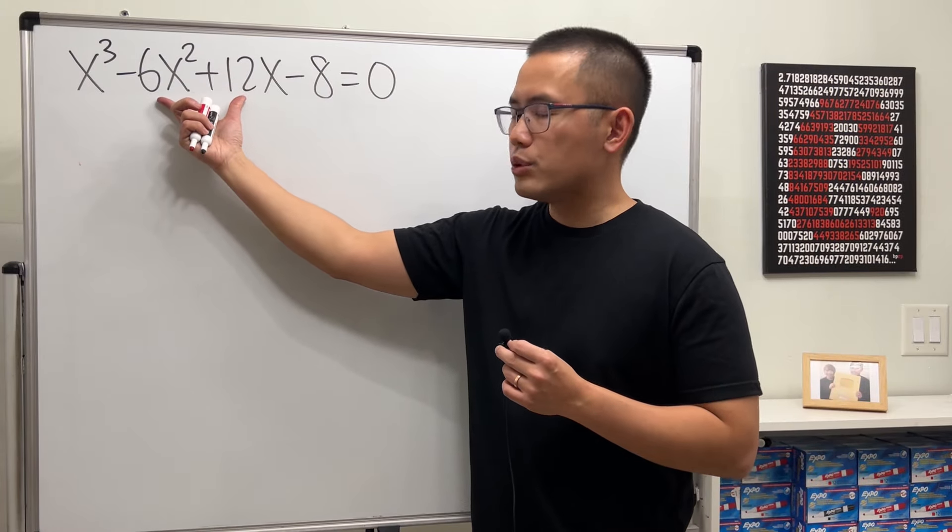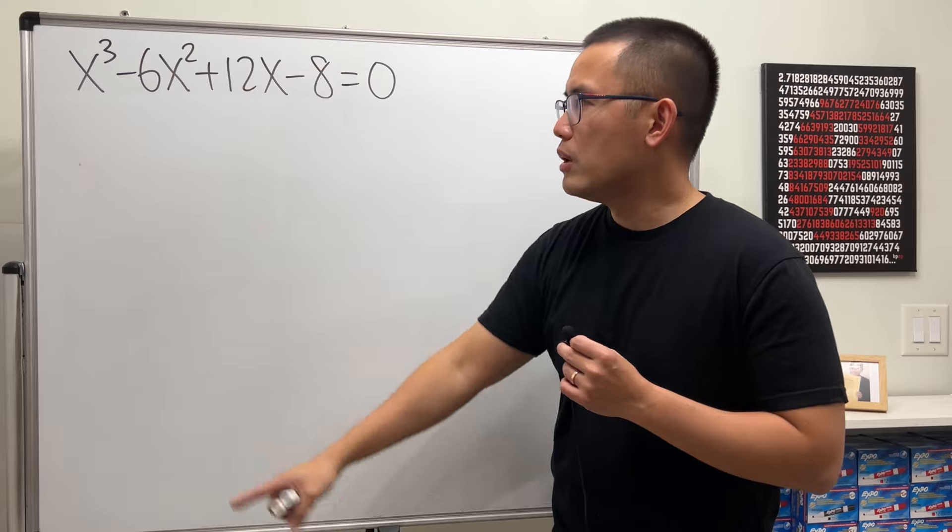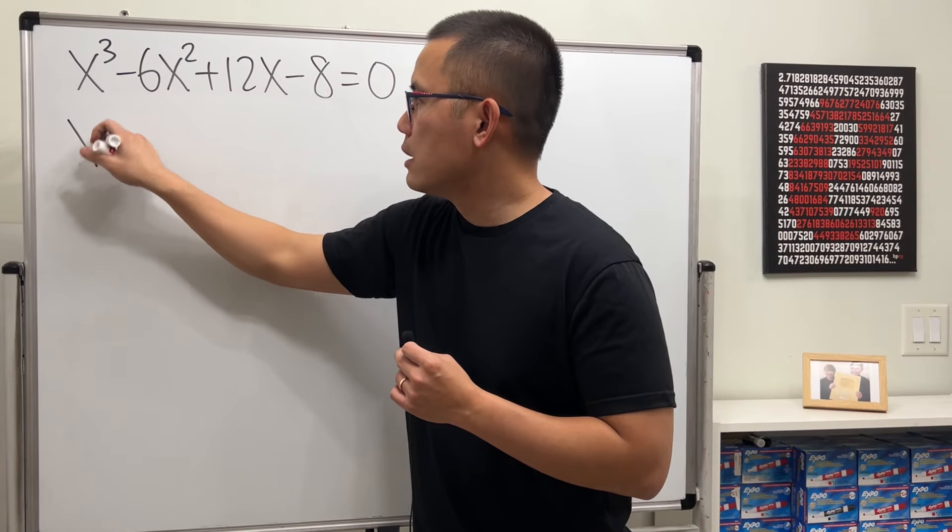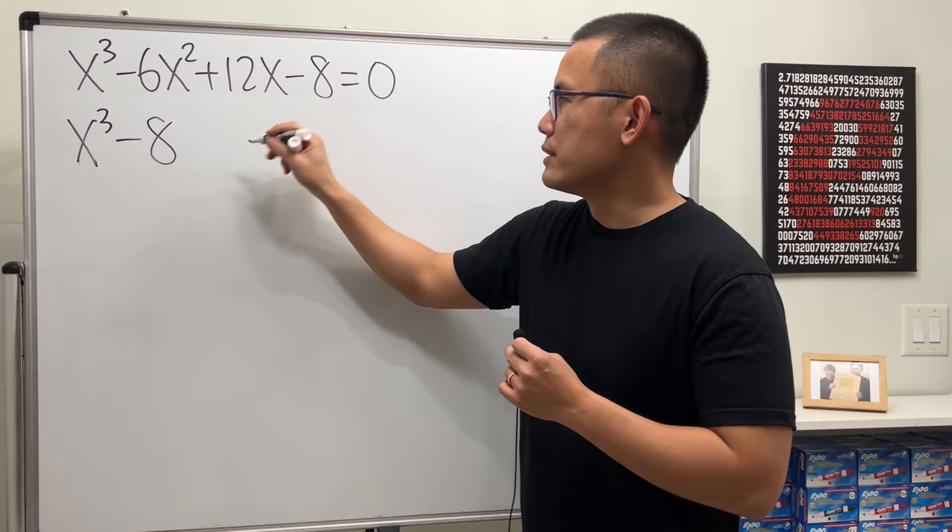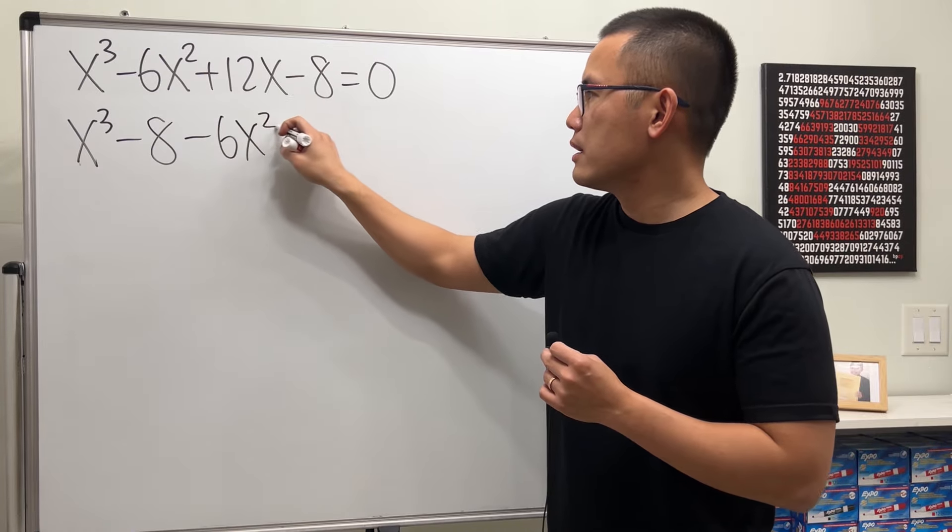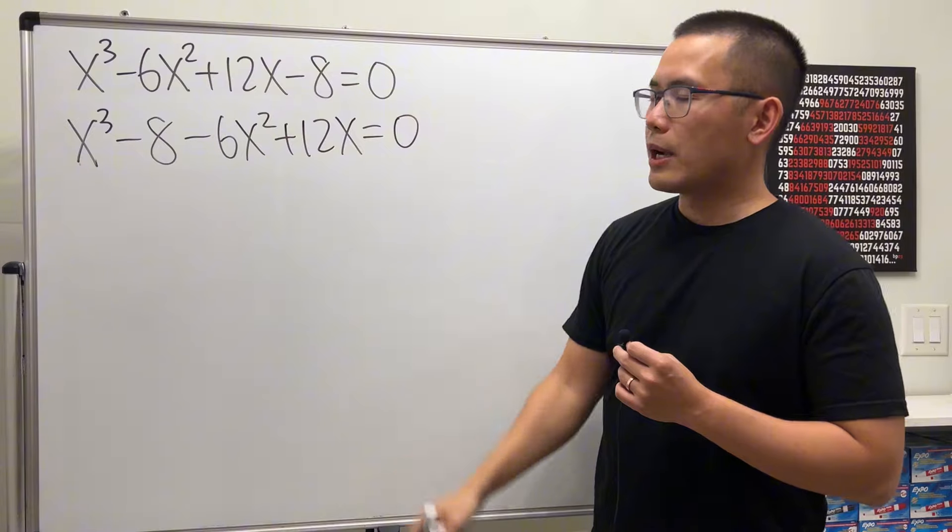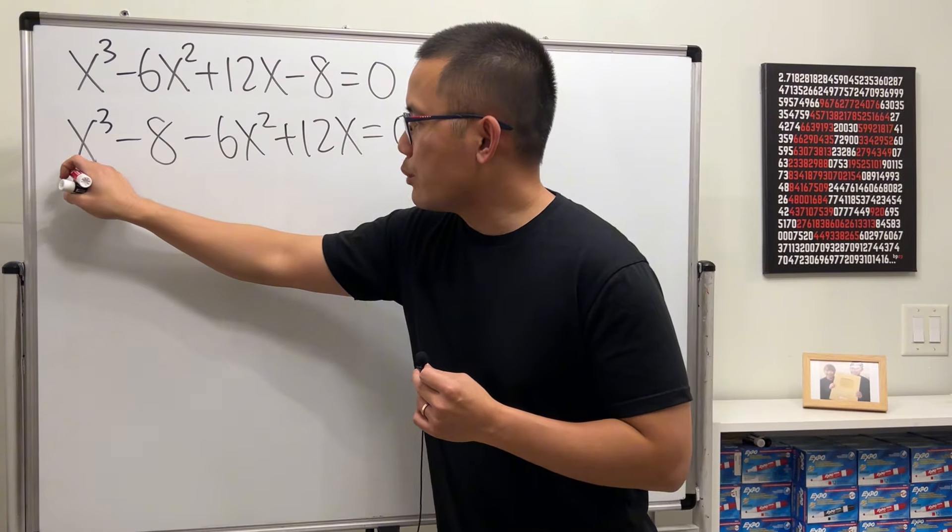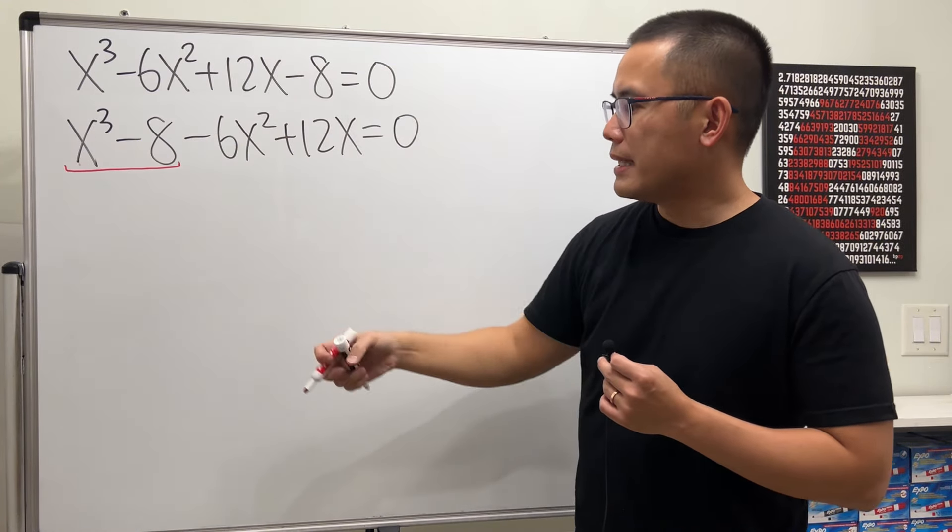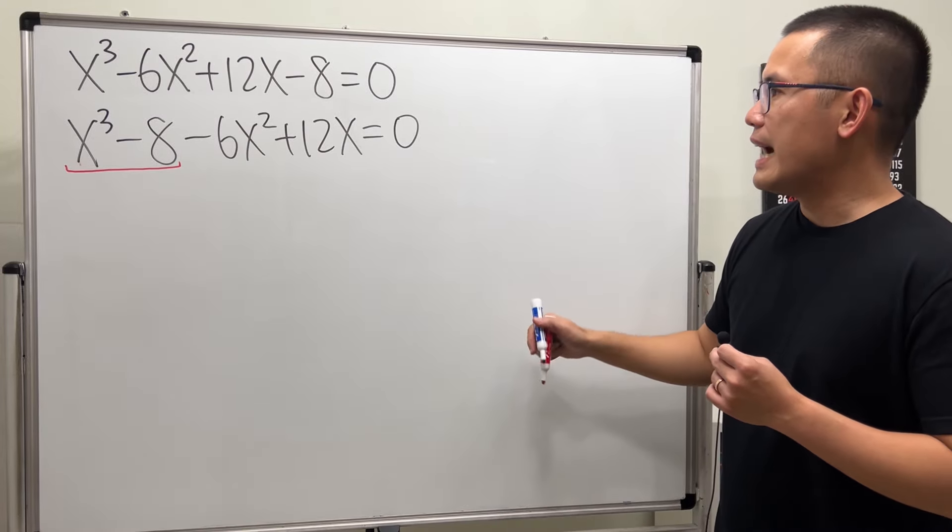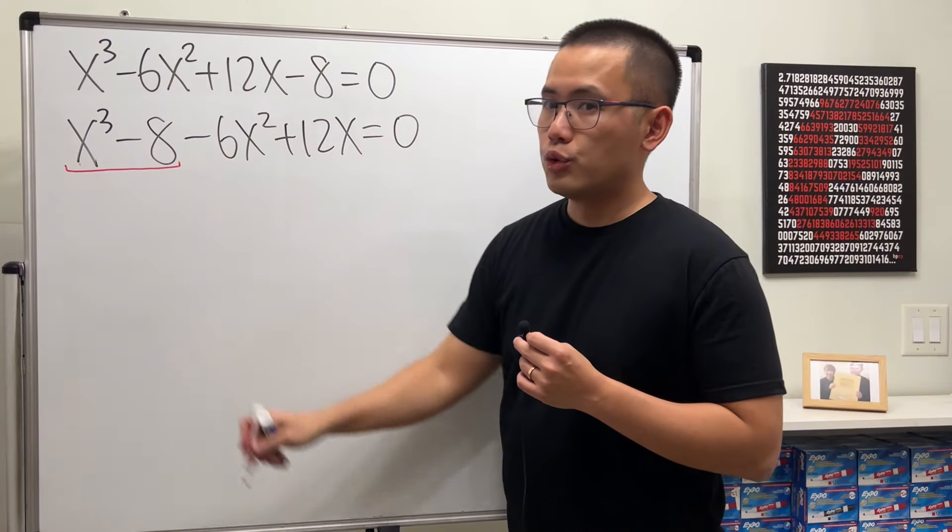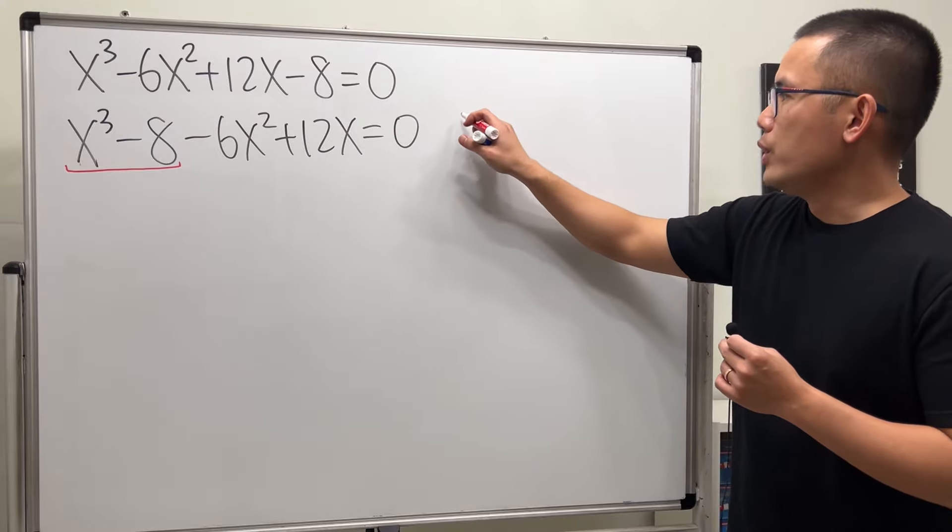So let's try to put these two together. Let's put x cubed minus 8 together, and then this right here. And try factor by grouping again. This time, we factor x cubed minus 8. And to do so, let me remind you the formula on the side. This is the difference of two cubes formula. So, we use this formula.